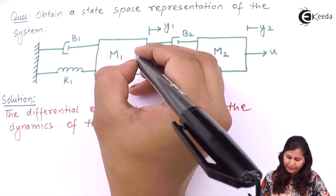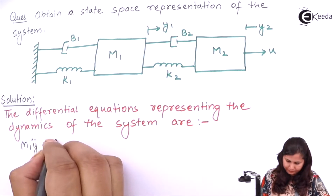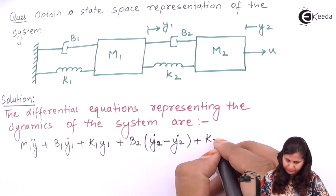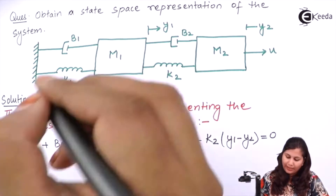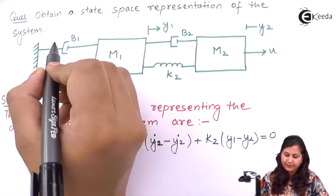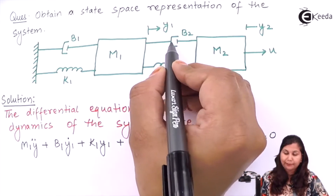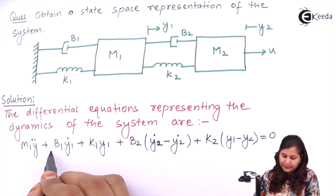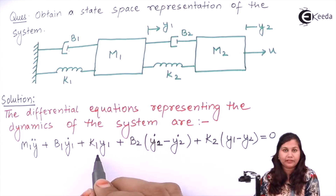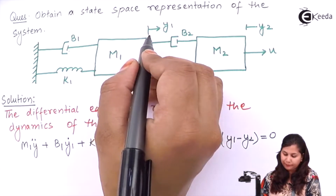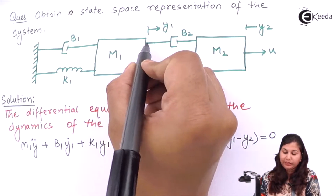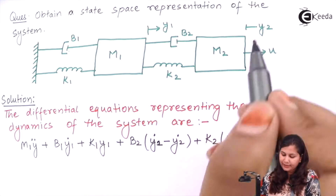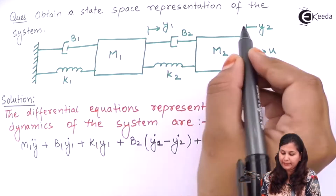For the first node y1 we have connections for mass m1, damper b1, and spring k1, as well as damper b2 and spring k2. So for m1 the force equation is m1 y1 double dot plus b1 y1 dot plus k1 y1. This damper b2 is connected between y1 and y2, so it contributes b2 times (y1 dot minus y2 dot).